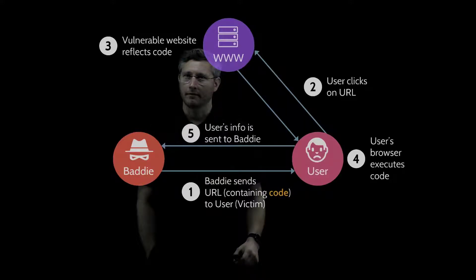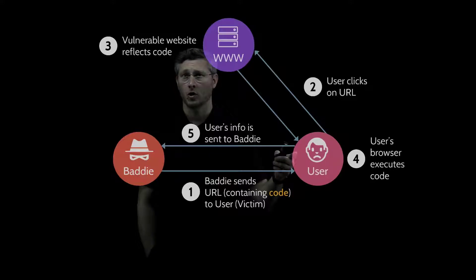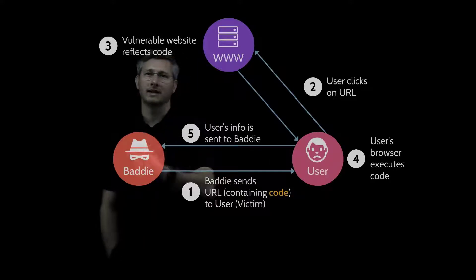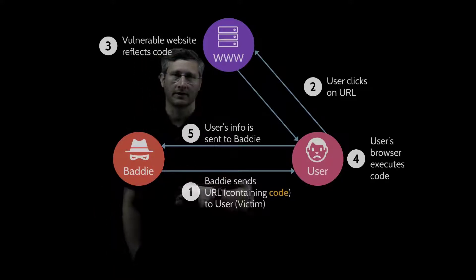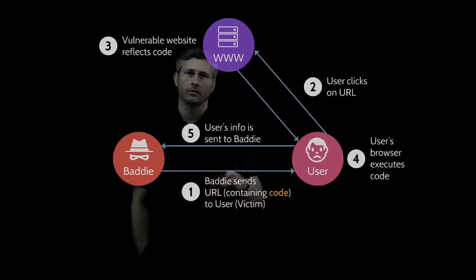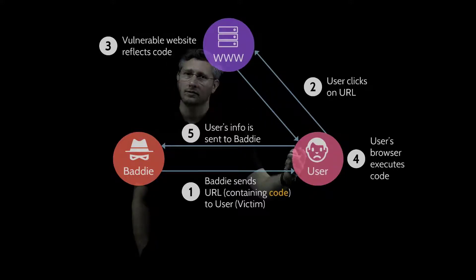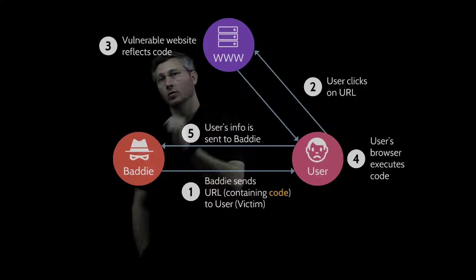Our user's browser does exactly what it's designed to do: execute the code. In step five, when the user's browser executes that code, what typically happens in a reflected cross-site scripting attack is that the JavaScript code requests the user's browser to send some data back to the baddie — some cookies or something like that. So our baddie sends a URL to the user, tricks the user into clicking it, the web server reflects the code back, the user's browser executes it, and data is sent to our baddie.